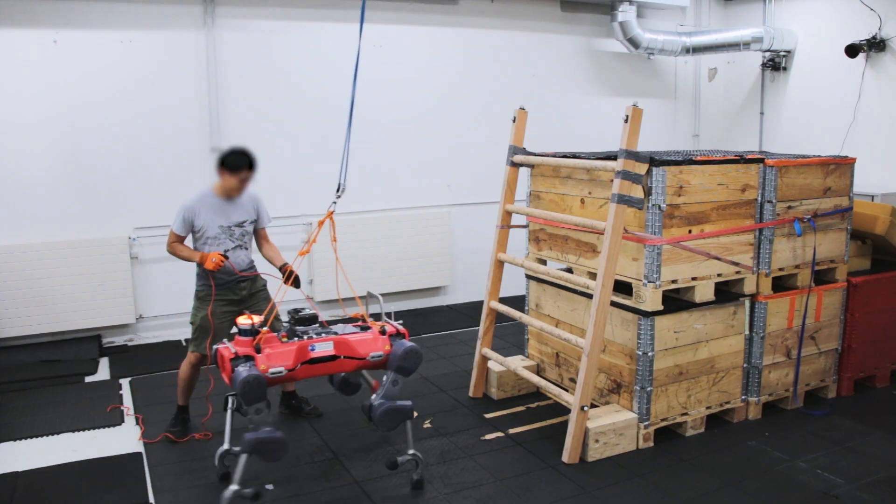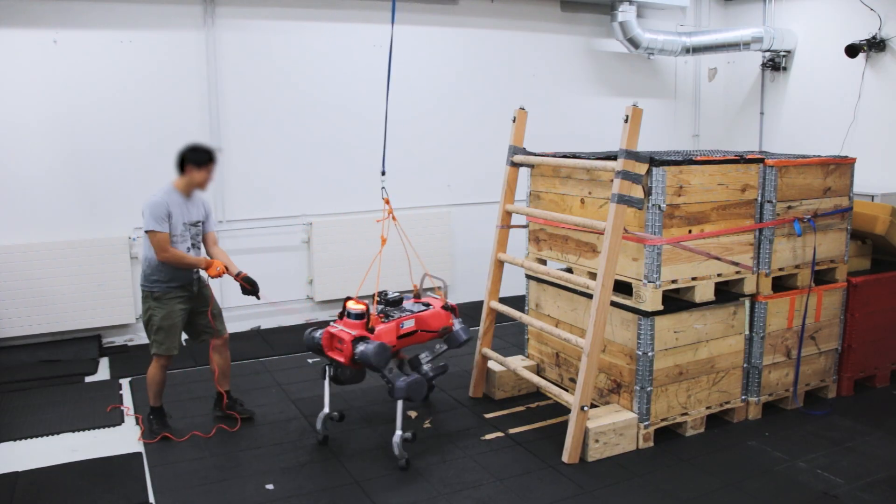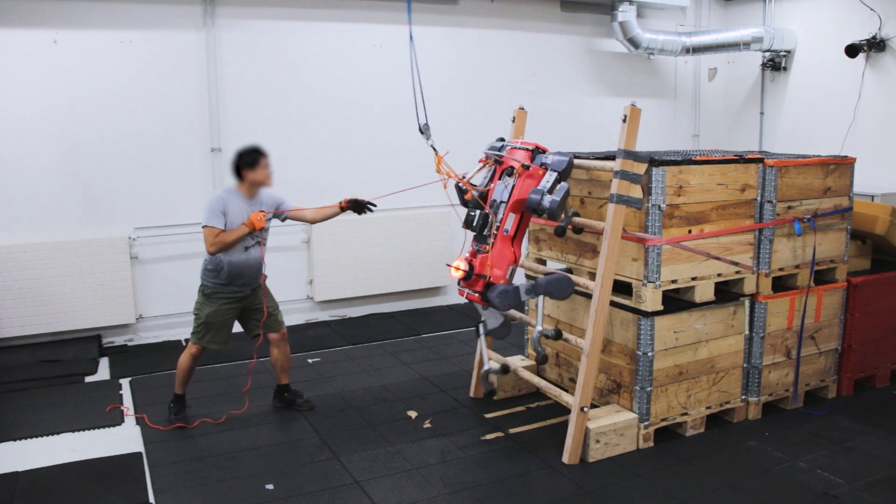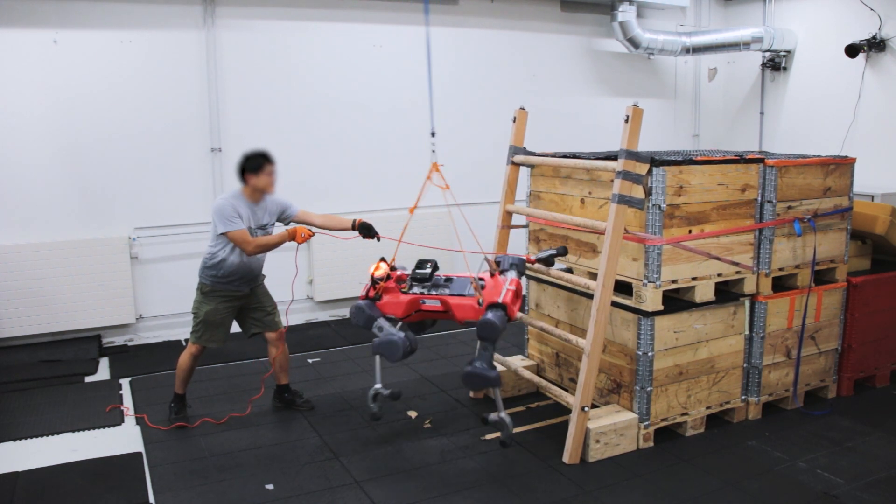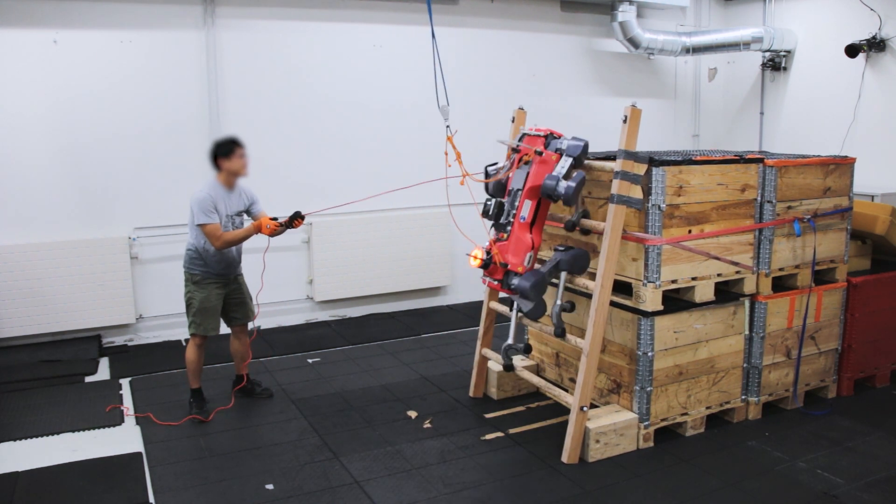The robot is also able to climb ladders when subject to unmodeled disturbances. Here, the robot uses the hook to brace itself against the ladder and successfully recovers after being pulled off the ladder.